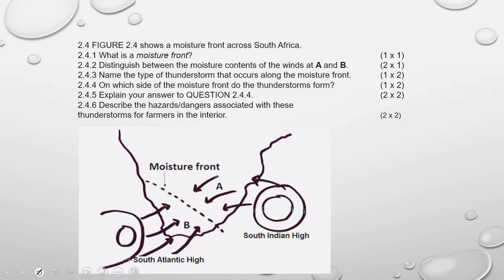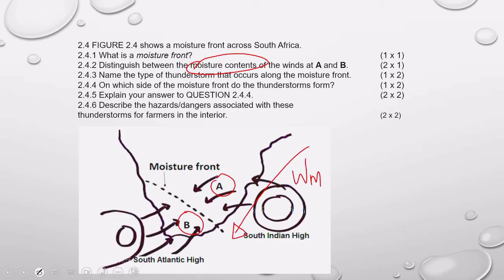Question 2.4.2: Distinguish between the moisture contents of winds A and B. The key word is moisture contents. How you answer this question is important: first say A and talk about A, then B and talk about B. A originates over the warm Mozambique channel, so it is a warm and moist area — in terms of moisture content, wind A will be moist. B originates from an area dominated by the cold Benguela current, so it is cold and dry; therefore the moisture content of B is that it is a dry wind.